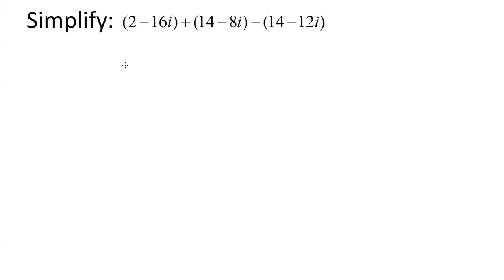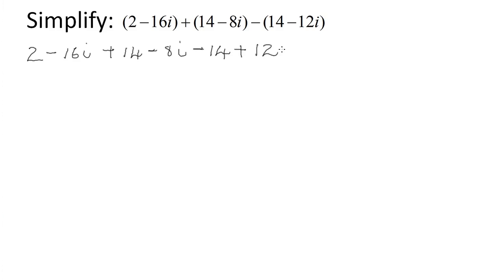Let's consider the following example: simplify (2 − 16i) + (14 − 8i) − (14 − 12i). We have a combination of addition and subtraction of complex numbers. Straightforward: 2 − 16i + 14 − 8i, but here comes the trick — a minus changes the signs of the terms that follow. That's why I always tell my students: 'a minus will minus you if you're not mindful of it in the exam.' So the minus sign gives us a plus 12i.